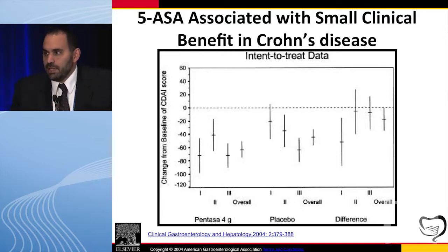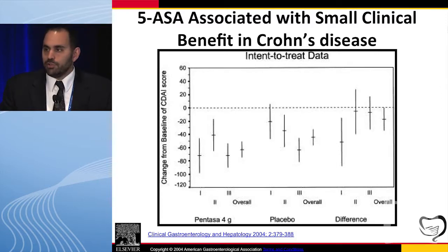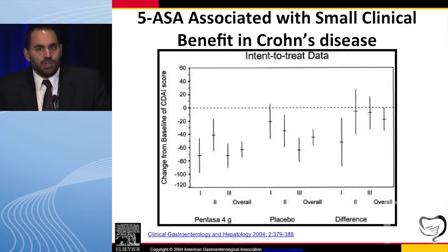Transitioning to Crohn's disease — many here probably use 5-ASAs a bit for Crohn's. This is an analysis of three randomized controlled trials comparing Pentasa to placebo for Crohn's disease. In the intention-to-treat analysis, there was about a 70-80 point decrease in CDAI in the Pentasa group, but comparing that to the placebo response gives an absolute net difference of only about 18 points — a mild and probably not significant difference. In the per-protocol analysis, however, you get around an 80-point difference between 5-ASA and placebo. So at best, I think we can say that 5-ASAs for Crohn's have a modest, if any, benefit.